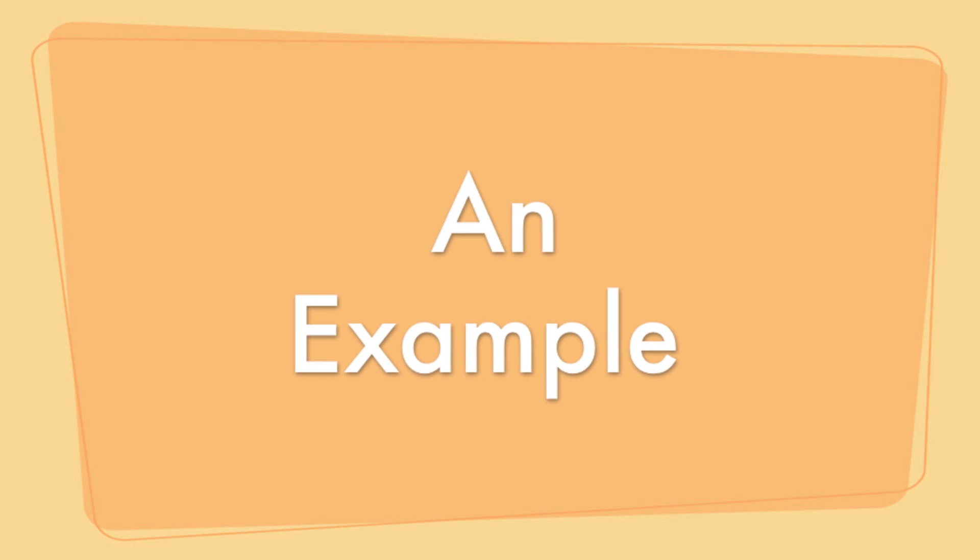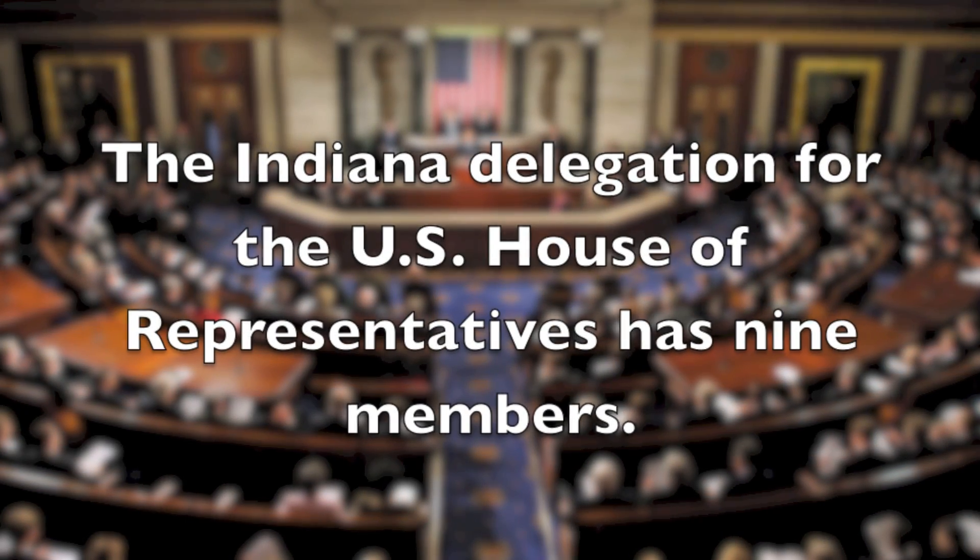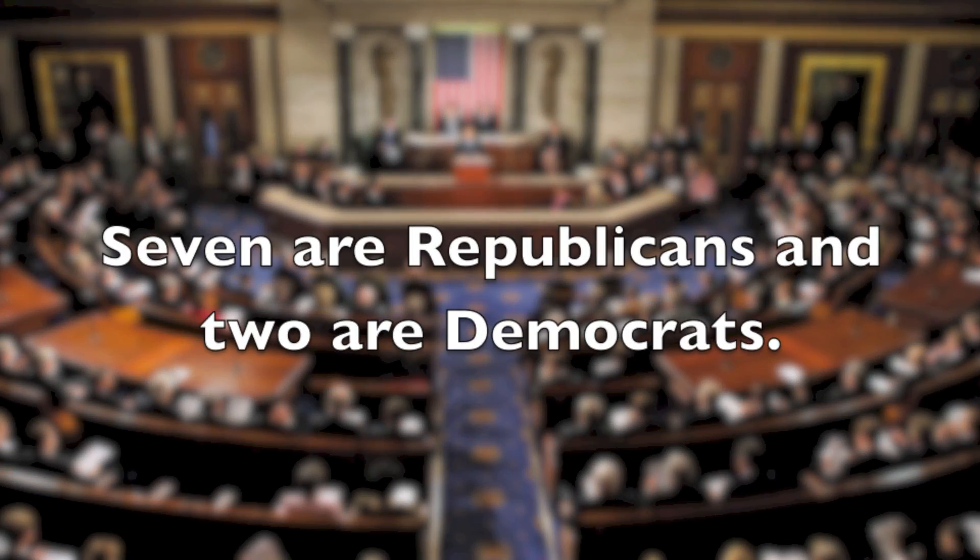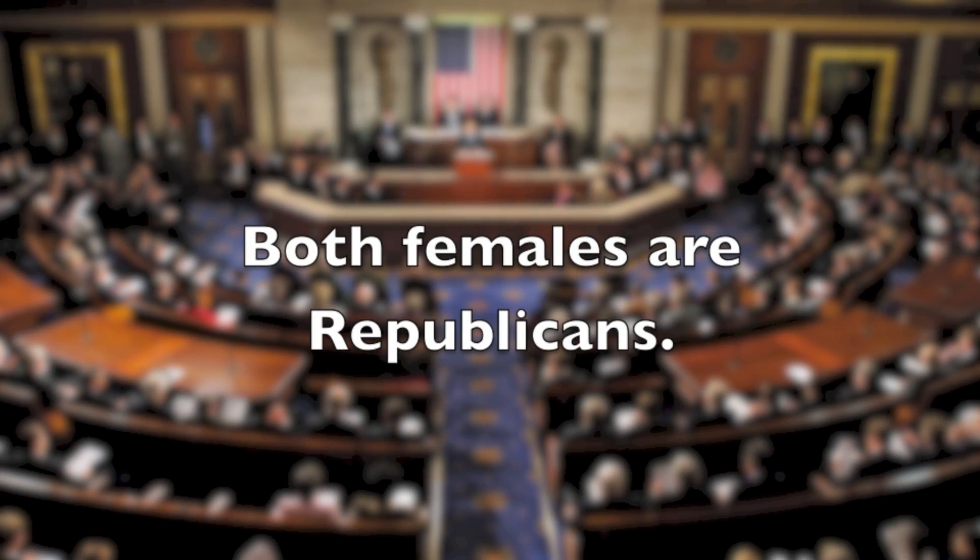An example of how this works will be the following. The Indiana delegation for the U.S. House of Representatives has nine members. Seven of them are Republicans, and two are Democrats. There are two females, and they are both Republican.